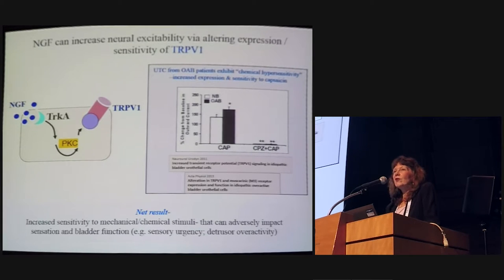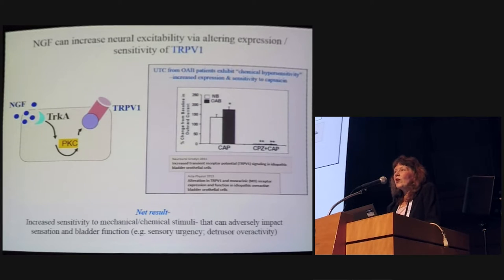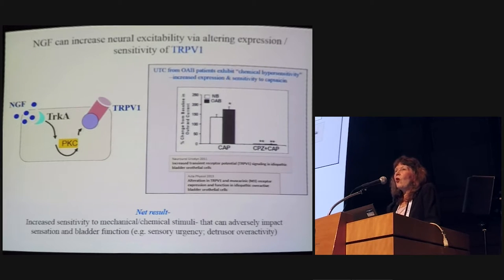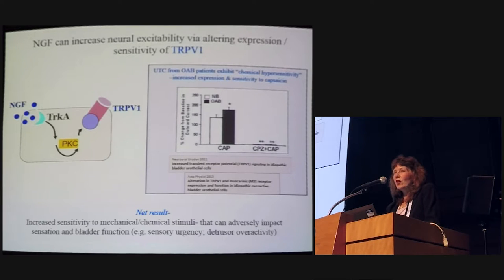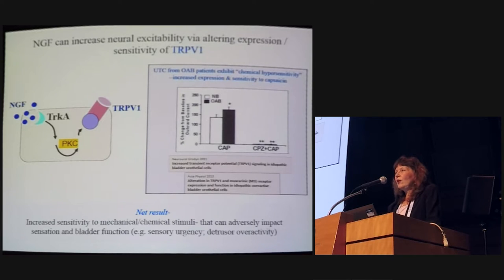Studies conducted with Toby Chai using urothelial cells isolated from patients diagnosed with idiopathic overactivity showed that these cells exhibited increased expression of TRPV1 only at the membrane, along with increased sensitivity to capsaicin. Patch clamp, intracellular calcium, and transmitter release studies confirmed the same finding. The net result is increased sensitivity to mechanical and chemical stimuli, which can adversely impact bladder function — changing sensory urgency, overactivity, and even bladder pain.